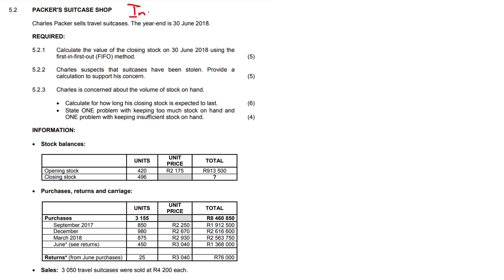Let us take a good look at inventory with a focus on FIFO, first in, first out. Charles Packer sells travel suitcases and the year end is the 30th of June 2018. Calculate the closing stock amount. So 5.2.1, first in, first out method. Whatever we buy first, we must sell first. This typically works in industries that have goods that are perishable, so like the food industry, running a supermarket.